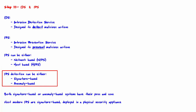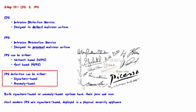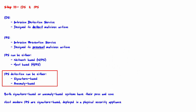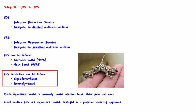IPS detection can be signature-based or anomaly-based. With signature-based detection, there will be one signature for every exploit it is capable of preventing. The signature works by zeroing in on some unique aspect of the particular exploit that is always present for that exploit. With anomaly-based detection, the system looks for signs of abnormal traffic and assumes that the abnormal traffic is malicious.